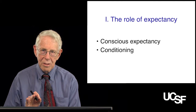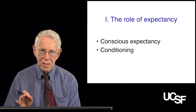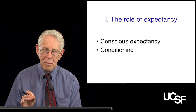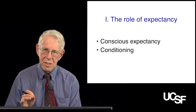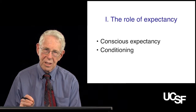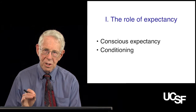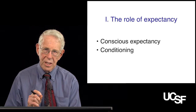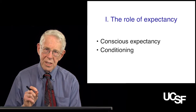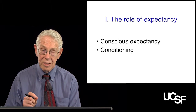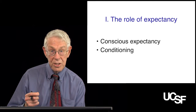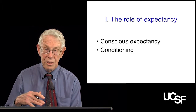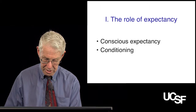We just discussed what the placebo effect was. Now let's talk about the psychological mechanisms that are involved. The most important of which is the role of expectancy, which I mentioned in the previous section. There are two types: one is conscious expectancy, usually following a verbal instruction. The other is conditioning, which could be either conscious or unconscious.